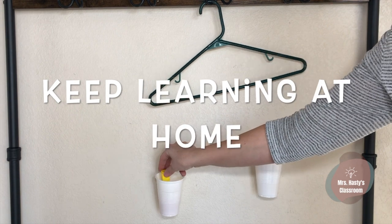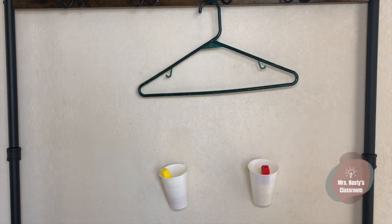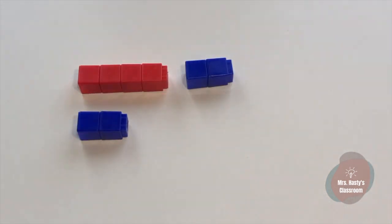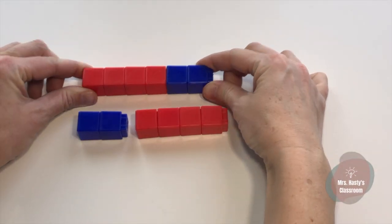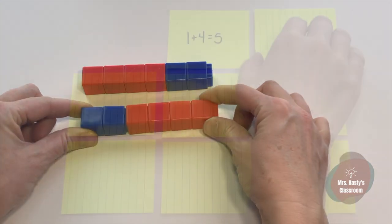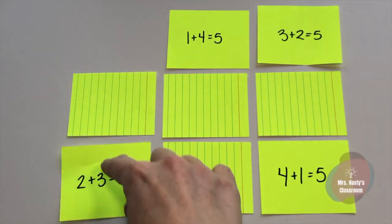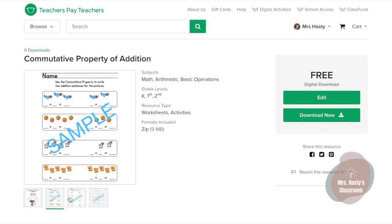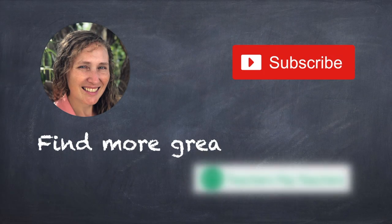Keep learning at home by balancing numbers on your own scale made out of a hanger, string, and cups. Use Unifix cubes to show that numbers can be added in any order. Play match with addition fact cards. And there's always printable resources available at my teacher's store at TeachersPayTeachers.com. Don't forget to subscribe!